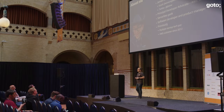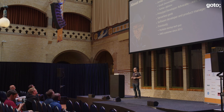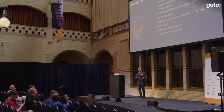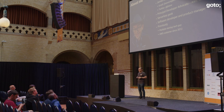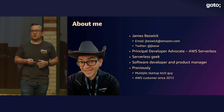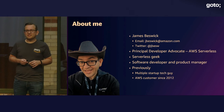My name is James Besik. I'm a principal developer advocate in AWS serverless. I've been a serverless geek for quite a few years, and before I was a DA, I was a software developer for quite a long time as well as a product manager. The most important thing on this slide is my email address and Twitter handle, so after the conference, if you're building anything and have questions, please reach out and I'll do my very best to help.